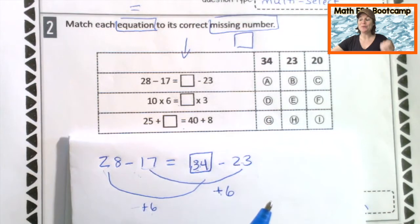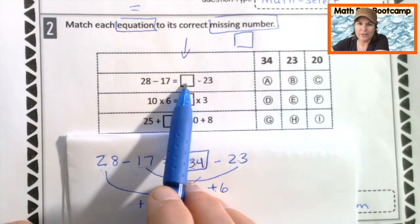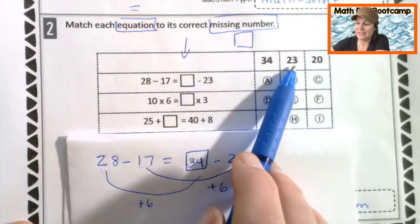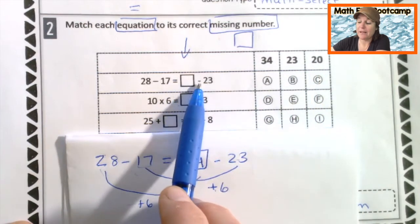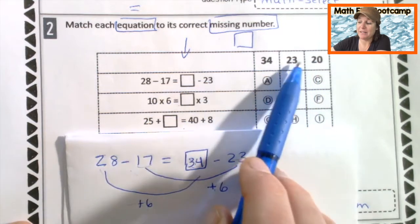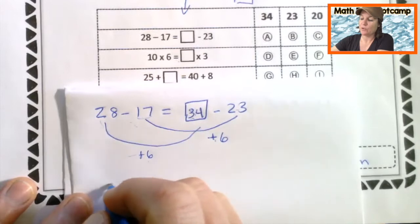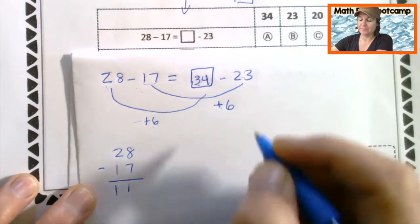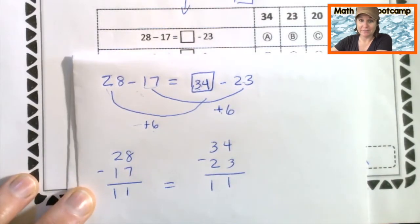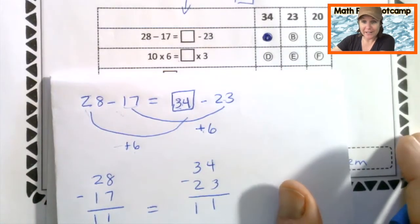And if you're thinking, Ms. McCarthy, what are you talking about? Well, we could have just plugged in a number here. Let's think about this again. If we plugged in 23 into that box, what's 23 minus 23? 0, right? And 28 minus 17 is not going to give us 0. So we can say it's not going to be 23. If we plugged in 20 here, 20 minus 23 would give us a negative number. 28 minus 17 is not going to give us a negative number. So we can go ahead and eliminate these two and conclude that it's 34. I'm going to take it a step further and just prove this out to show you that both sides are balanced. So 28 minus 17 gives us 11. 34 minus 23 gives us 11. And 11 equals 11. Okay? There's a bunch of different ways to think about why 34 is the correct answer. You might need to go back and rewind and rewatch what I just said until it clicks for you. Okay?